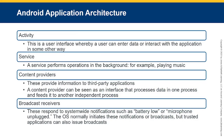The Android application architecture includes: an Activity, which is a user interface where users can enter data or interact with the application; a Service, which performs operations in the background such as playing music; Content Providers, which provide information to third-party applications and can be seen as an interface that processes data in one process and feeds it to another independent process; and Broadcast Receivers, which respond to system-wide notifications such as battery low or microphone unplugged. The OS normally initiates these broadcasts, but a trusted application can also broadcast.